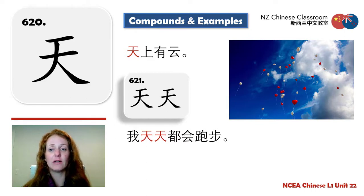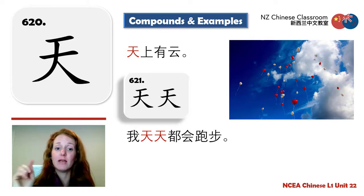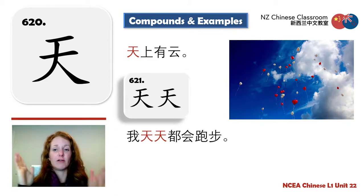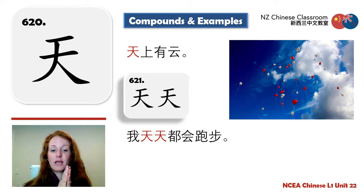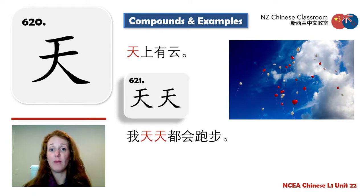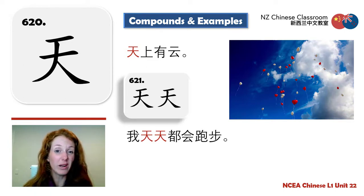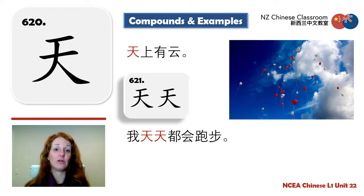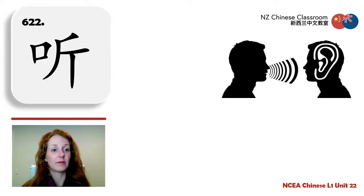天天 has more emphasis than 每天, which also means every day. 天天 really focuses on 'every single day.' Example: 天天我妈妈送我去学校 — Every day, my mom takes me to school. A friend might emphasize this with 天天 when they're surprised.